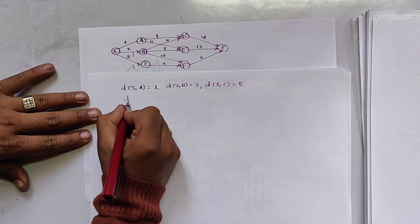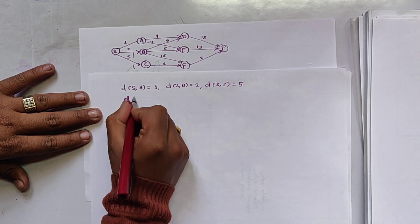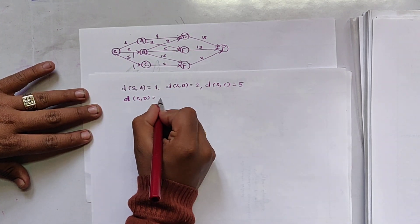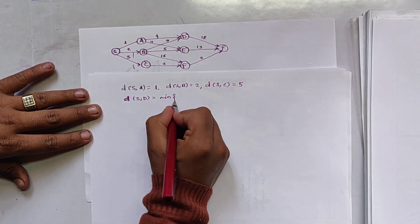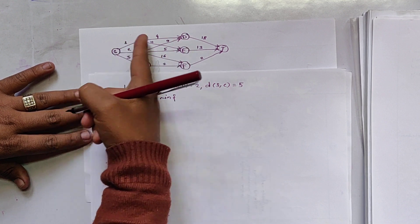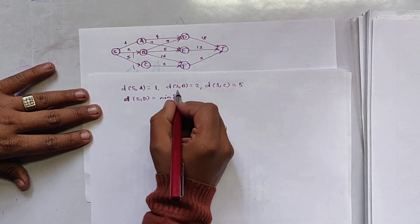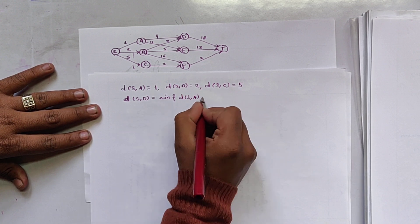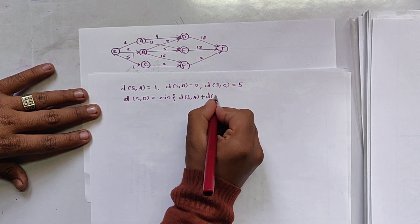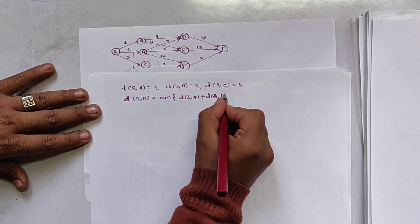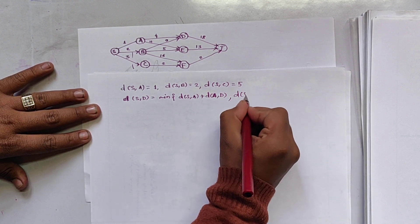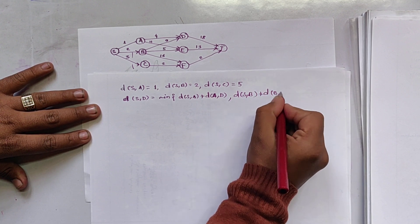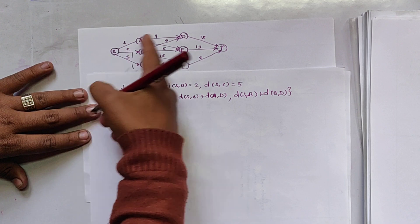We now find the value of d(s,d). Node d can be reached from a to d, or from b to d. So we take the minimum value of d(s,a) + d(a,d) and d(s,b) + d(b,d).